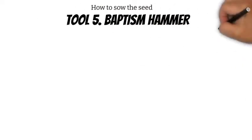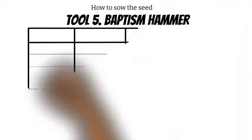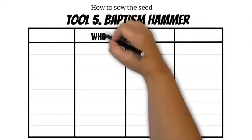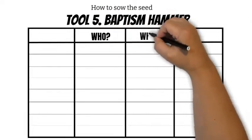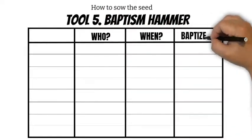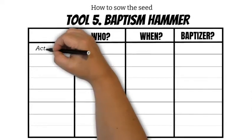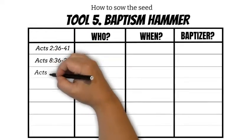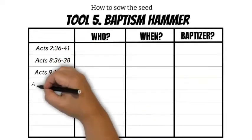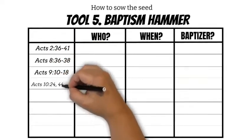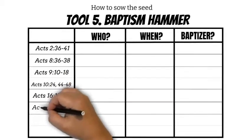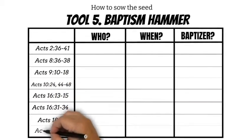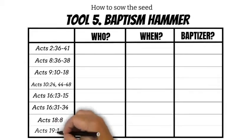In your training, ask your participants to draw a chart with four columns and write on top: who was baptized, when they were baptized, and who was the baptizer. Write all these scriptures in the first column. If they have the training manual, they can use the chart on page 12. If you are training a good number of people, you can break up in groups and ask them to open their Bibles and discover in the scripture the answers.